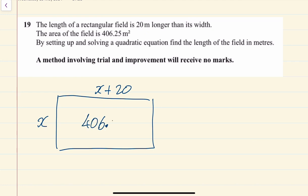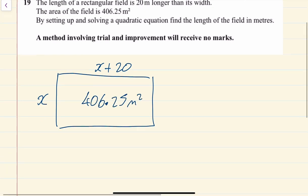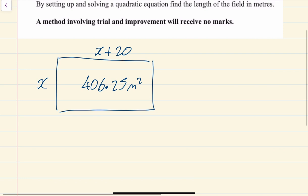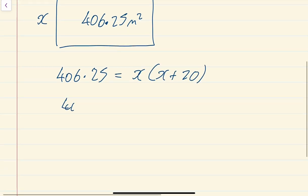That's just going to be an area question then. Remember, area is length times breadth. So 406.25 equals x times x plus 20. And then we'll just foil that in. That's 406.25 equals x squared plus 20x. Bring it all to one side, put it equal to zero.